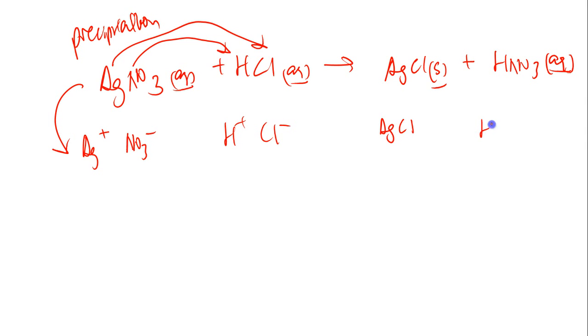HNO3 aqueous can be split into its ions. Cancelling out the like ions on both sides: NO3 minus, H plus. I am simply left with Ag plus, aqueous state, plus Cl minus, aqueous state, giving me my AgCl, which is the solid precipitate.